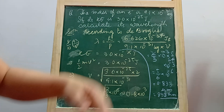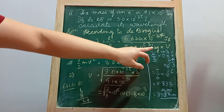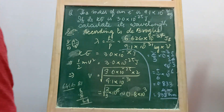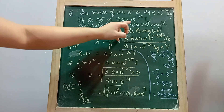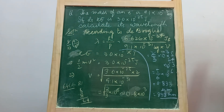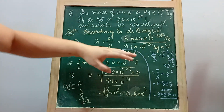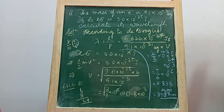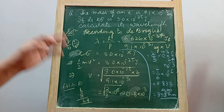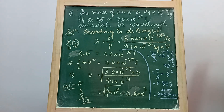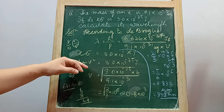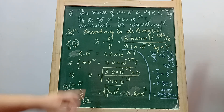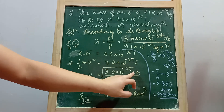Momentum of a moving body is the product of mass and velocity. The mass is given as 9.1 × 10⁻³¹ kg since it is an electron, but the velocity is not directly given. To find velocity, we use the kinetic energy: KE = 3.0 × 10⁻²⁵ joules. Note that 3.0 means two significant figures, so the result must have at least two significant figures. Kinetic energy = ½mv², so velocity = √(2·KE/m).